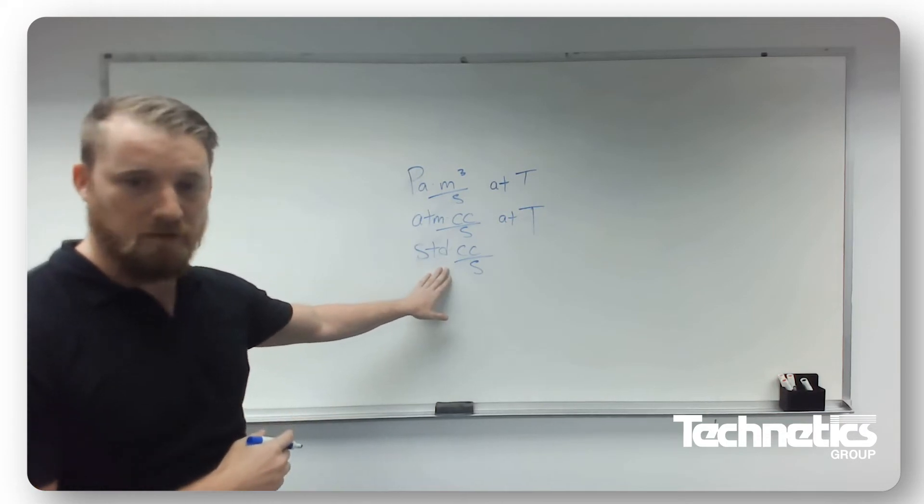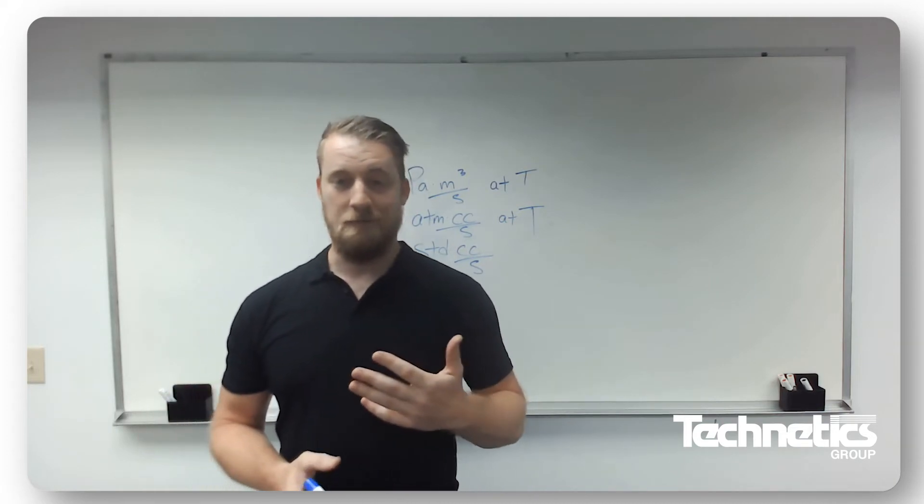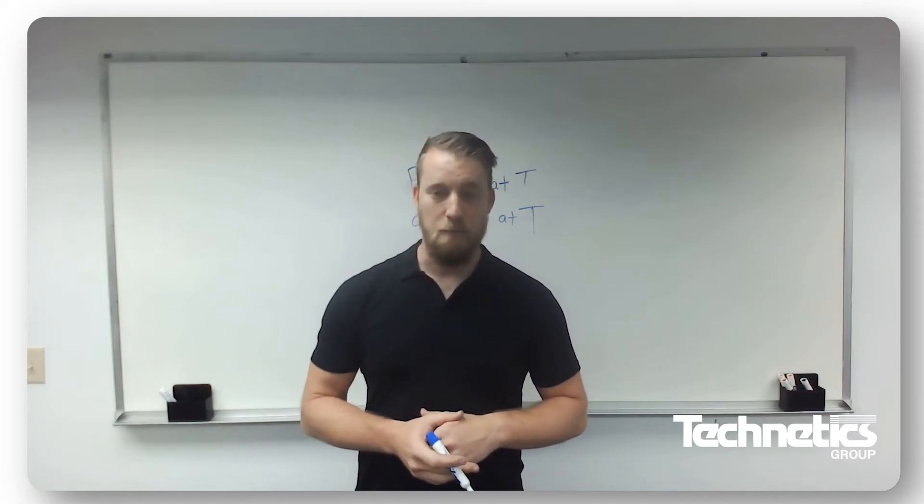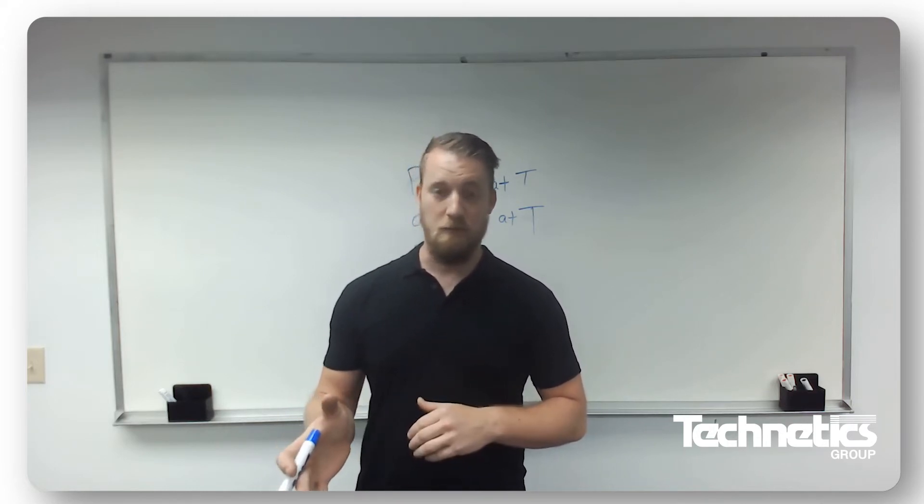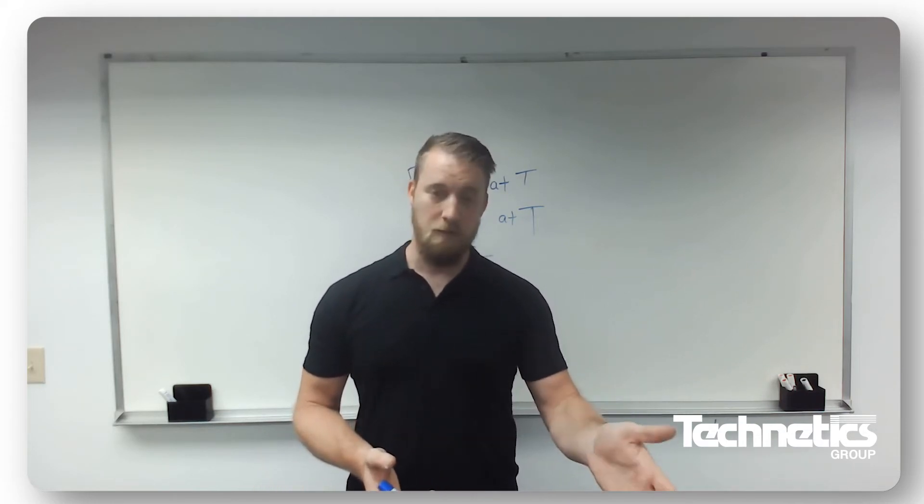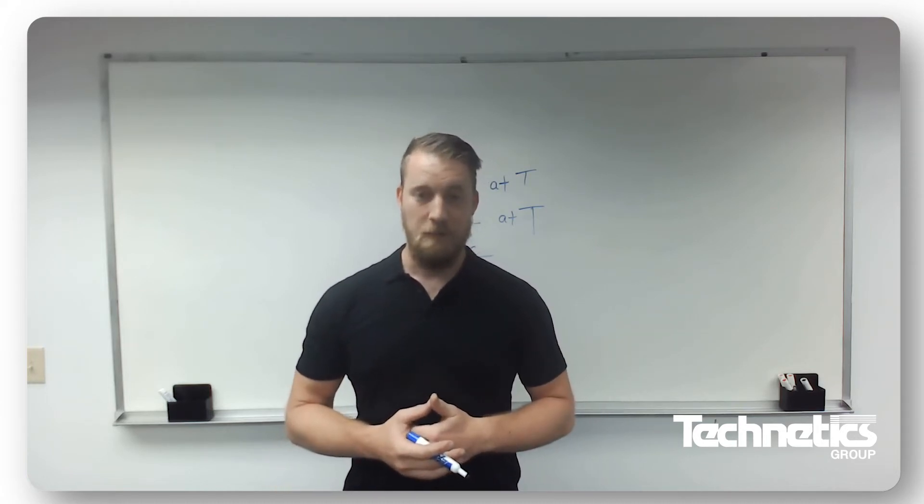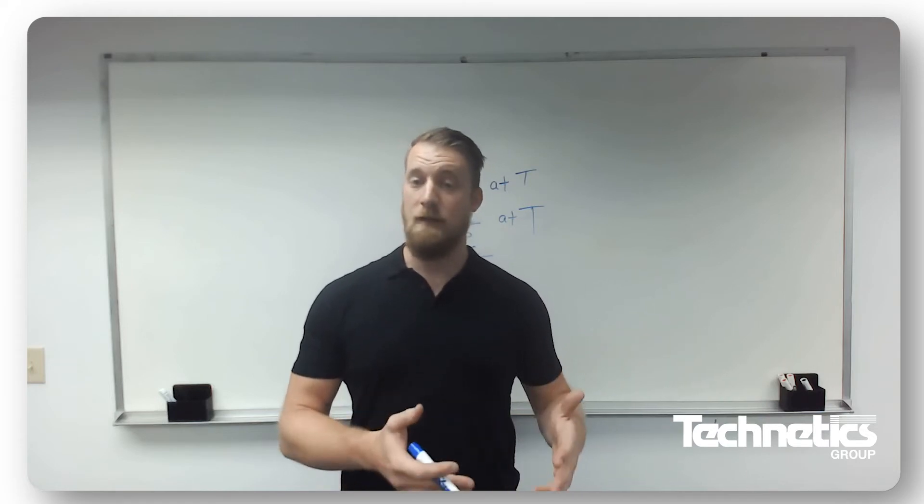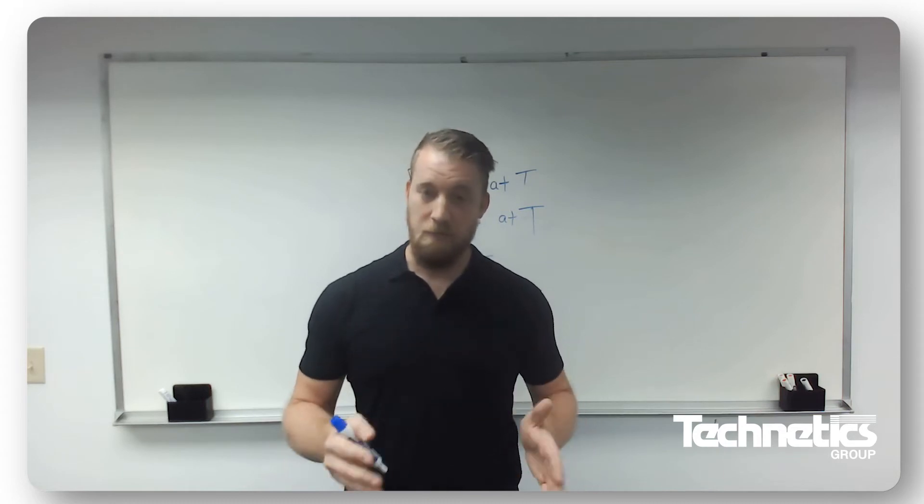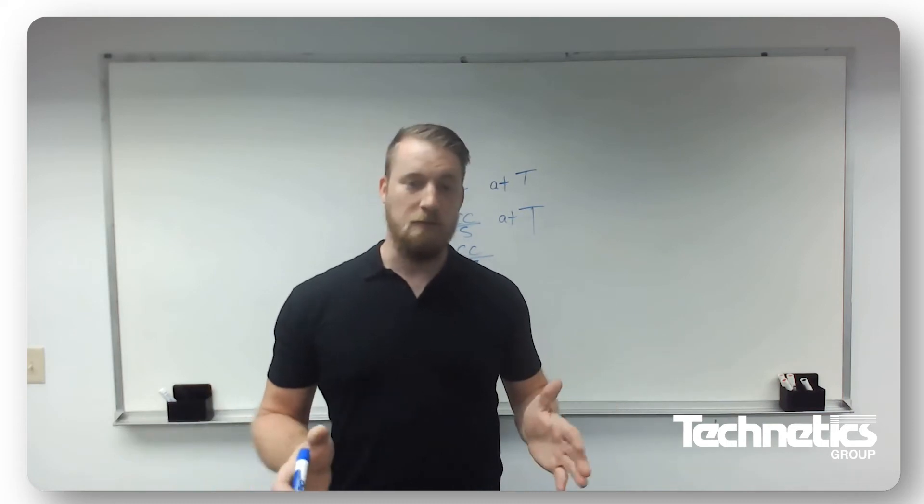Now, standard cc per second is a little bit different because what this is implying is that you're following a standard. And if you are following, say, NIST, the National Institute of Standard and Technology, standard temperature and pressure according to that is 0 degrees Celsius and 101.325 kilopascal. If you're following IUPAC, their standard atmospheric conditions are 25 degrees Celsius and 100 kilopascal. And if you're following ISO, ISO has so many different standard temperatures and pressures that you even have to specify which ISO standard you're following for that application. And once we have all this information, then we're well on our way to designing a solution that will fit your needs.